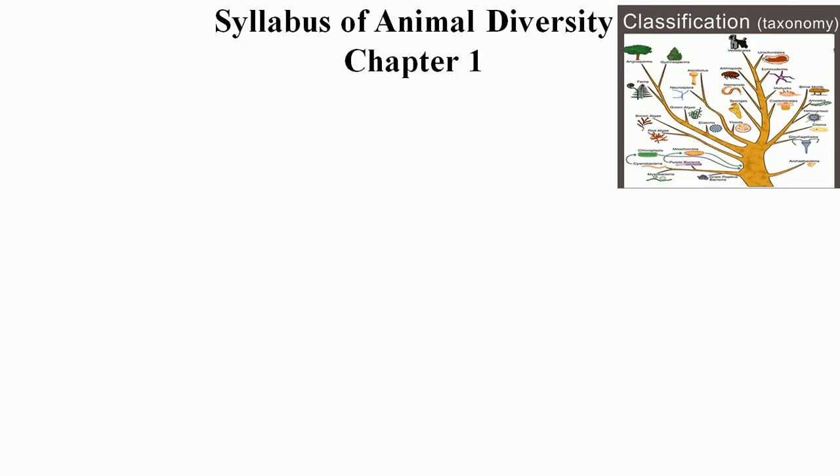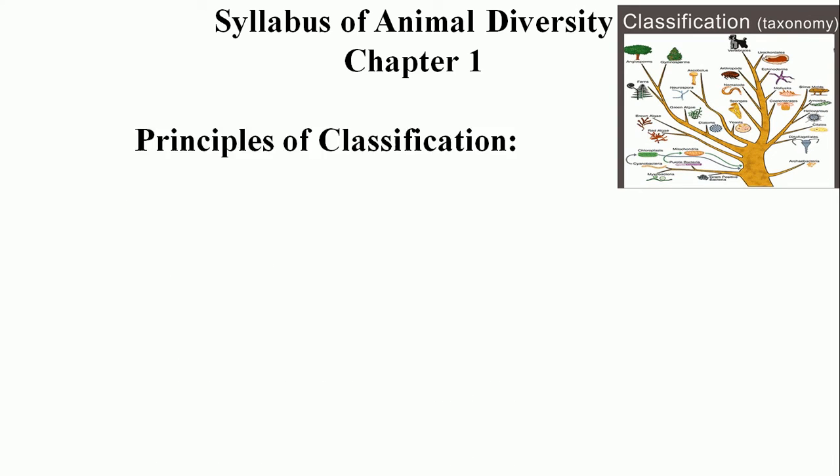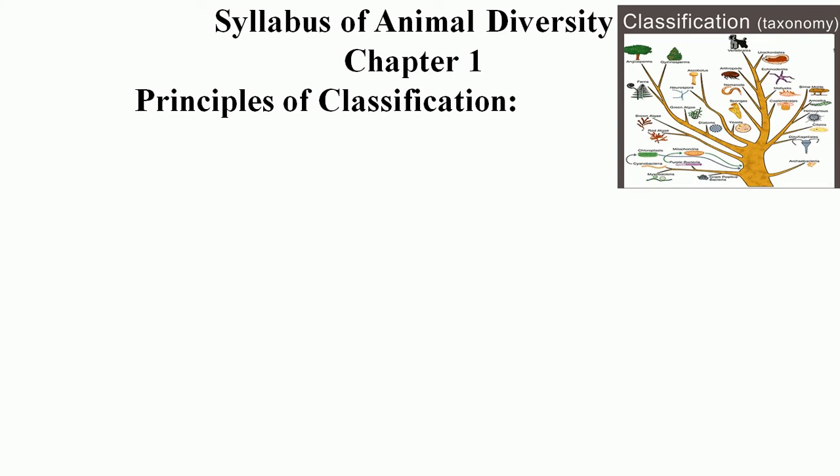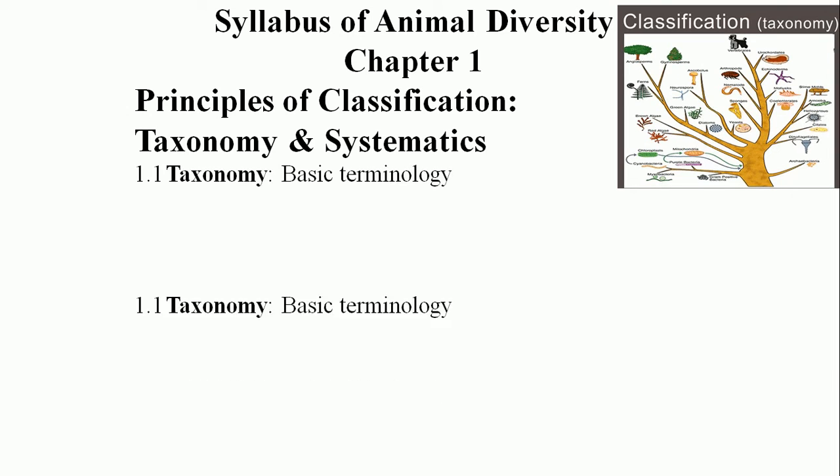We will quickly go through the syllabus of Animal Diversity 1. In the syllabus, I will cover Chapter 1 — Principles and Classification of Taxonomy and Systematics. In the taxonomy part, we learn the basic terminology and introduction.